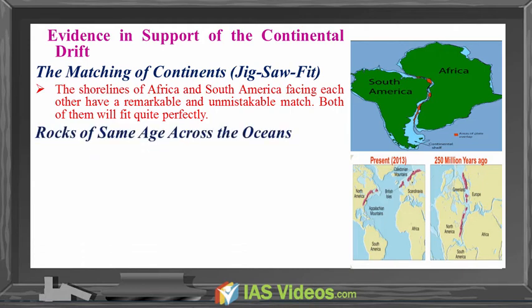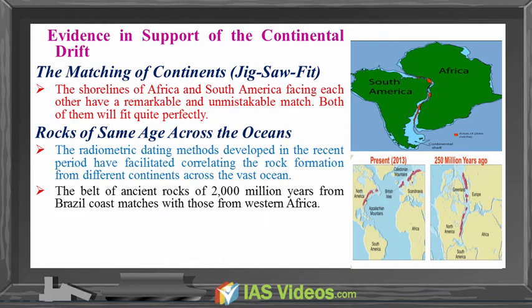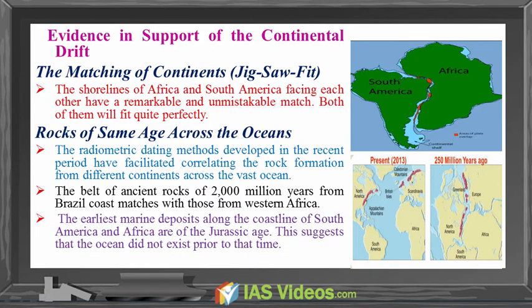Rocks of same age across the oceans. The radiometric dating methods developed in the recent period have facilitated correlating rock formations from different continents across the vast ocean. The belt of ancient rocks of 2,000 million years from the Brazil coast matched with those from Western Africa. The earliest marine deposits along the coastline of South America and Africa are of Jurassic Age, which suggests that the ocean did not exist prior to that time.